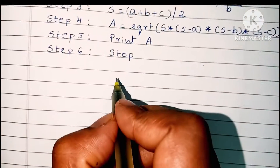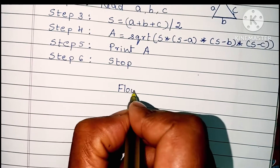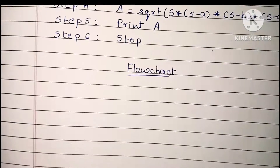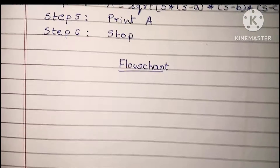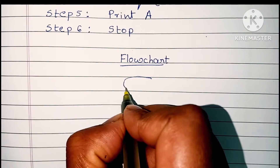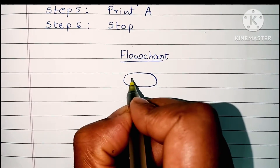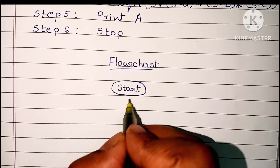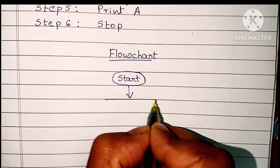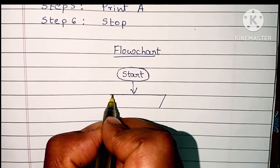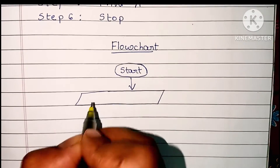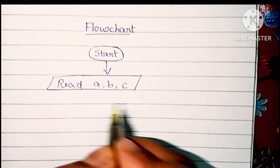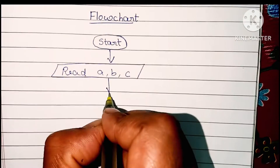Next we have to draw the flowchart to find the area of a triangle. A flowchart is a graphical representation of an algorithm. It also starts with the start statement. The start statement is always written within an oval shape. Next we have to read the input values — to find the area of a triangle we have to read the three sides: a, b, c.